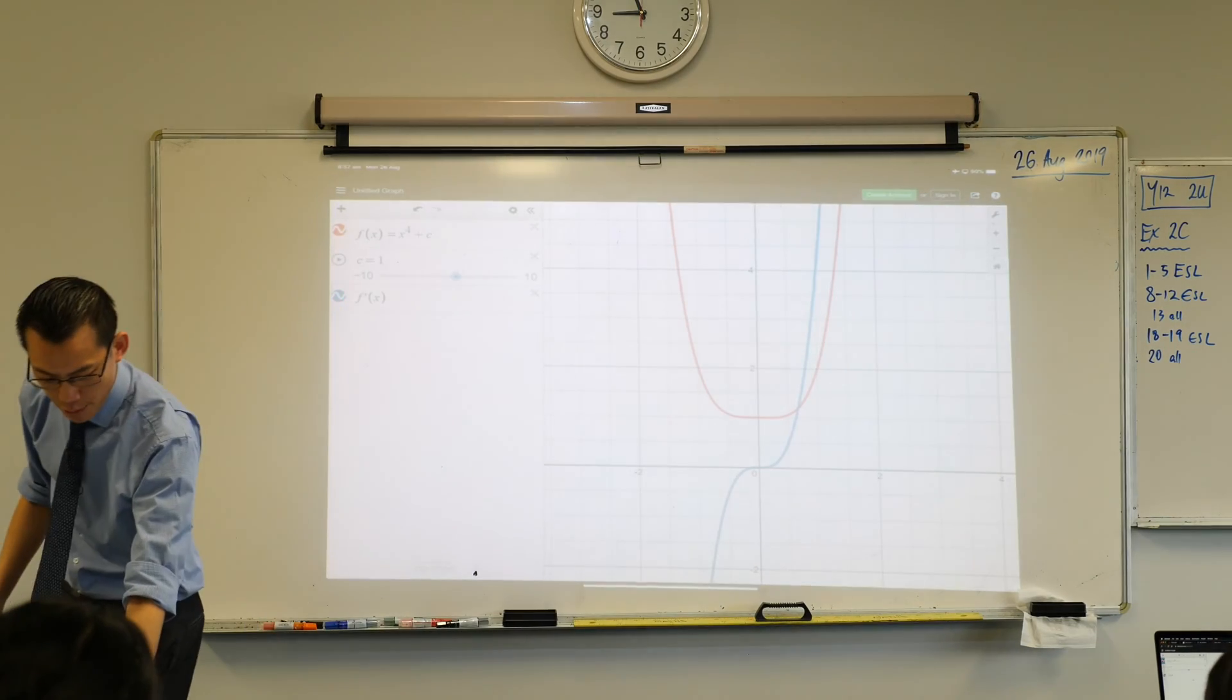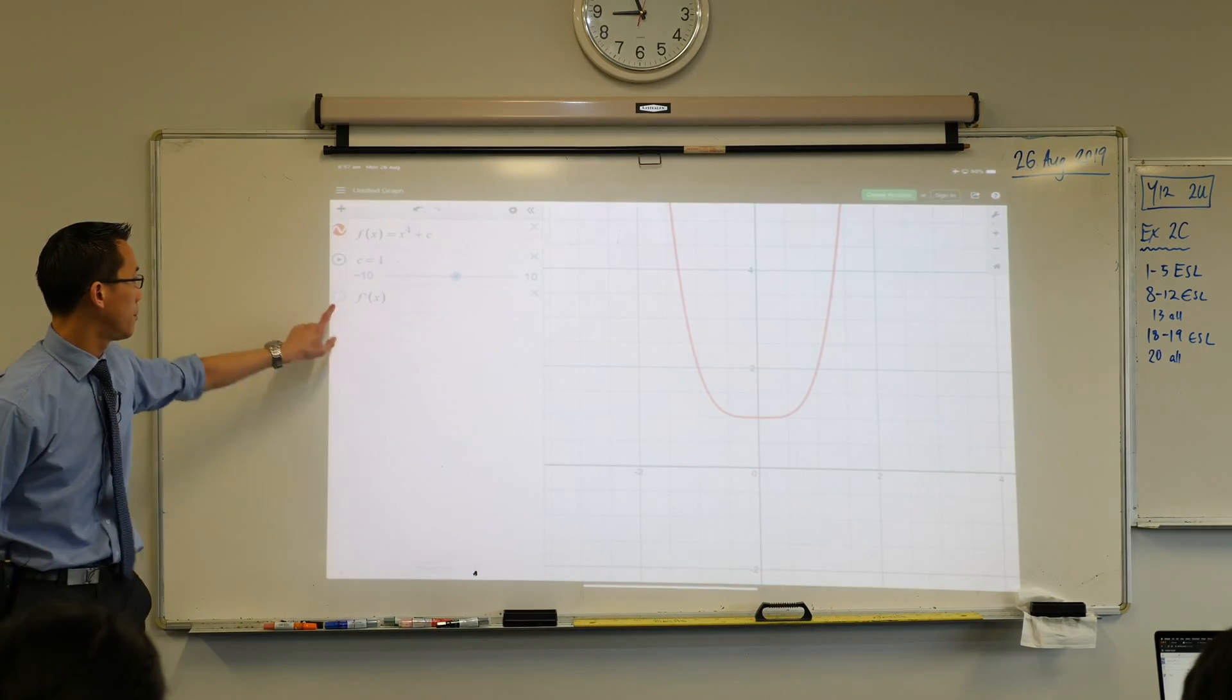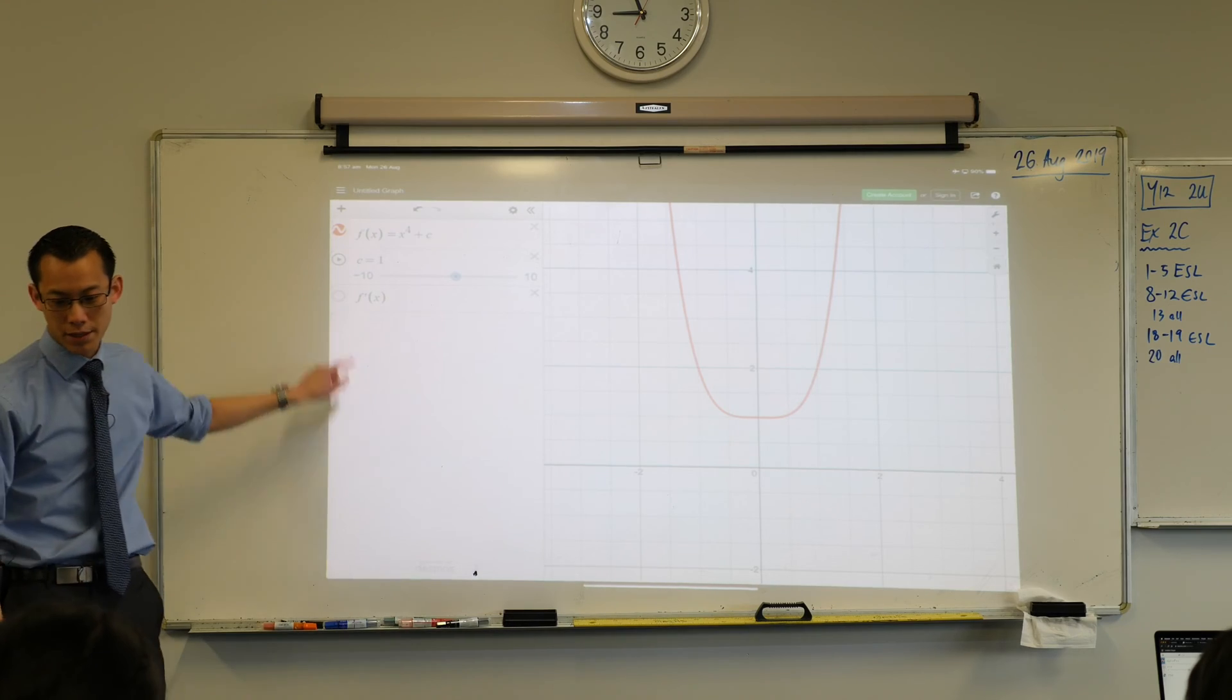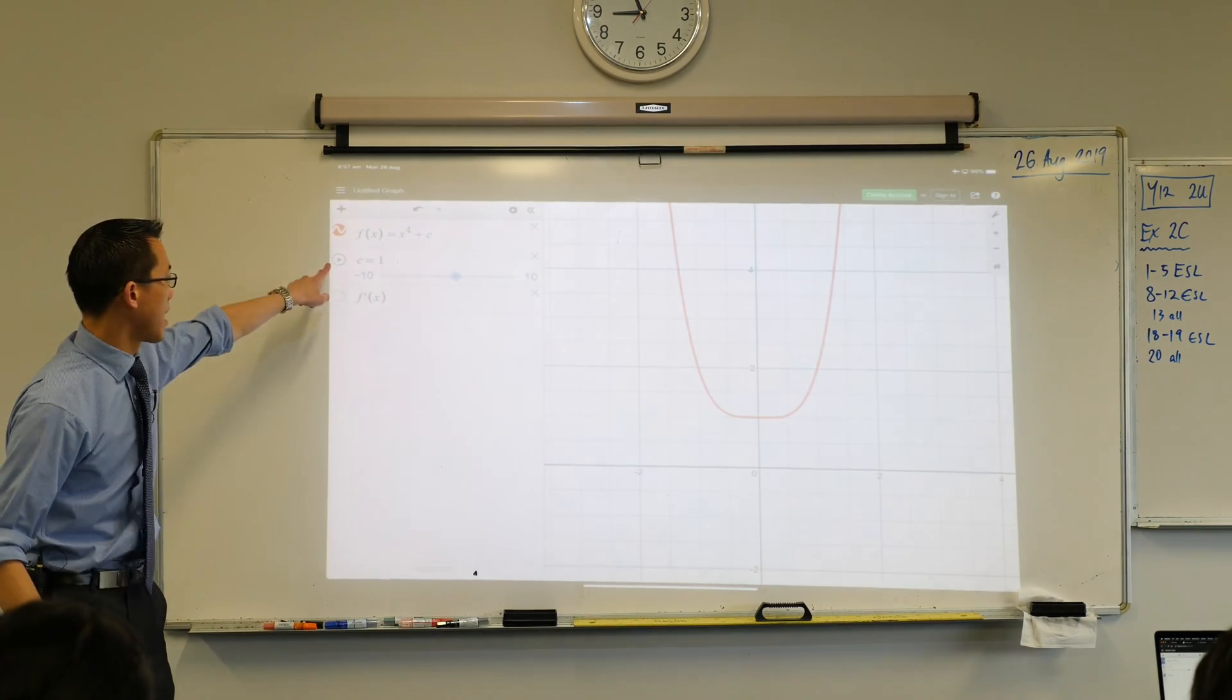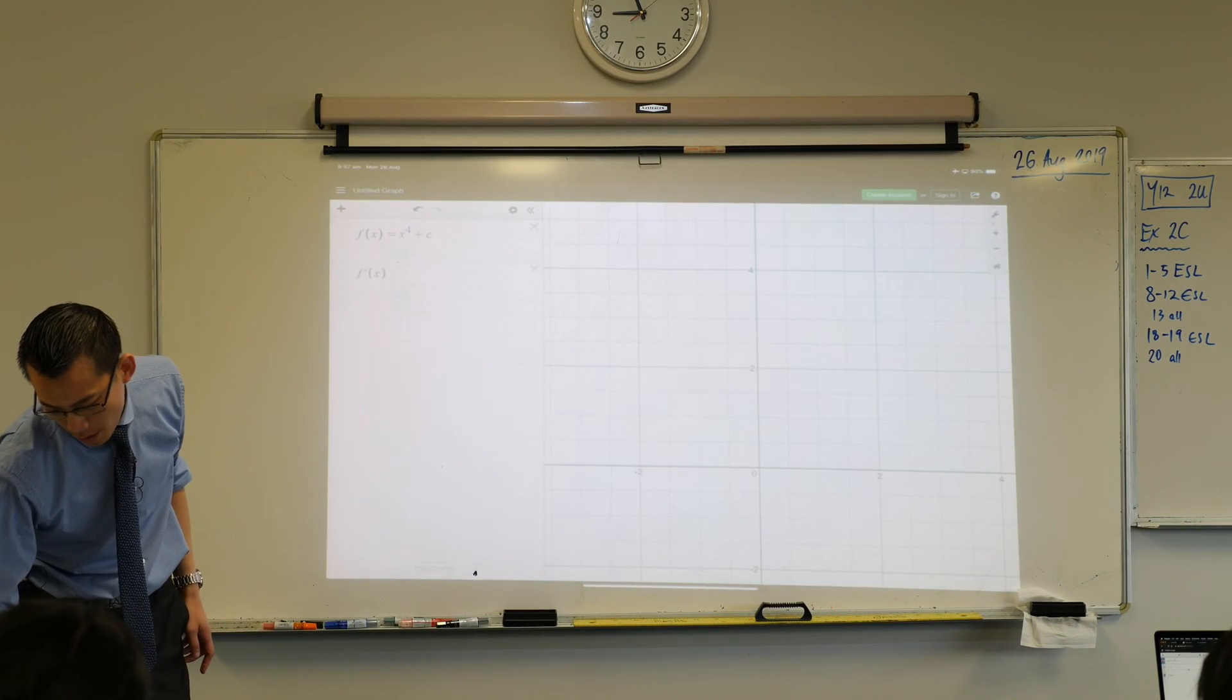Here's what I'd like you to do. Just hide that blue graph for a second. Tap on the circle over here so it disappears. You can get rid of this slider if you like. We're not going to need it for now.